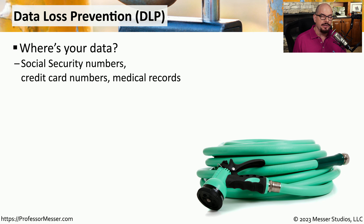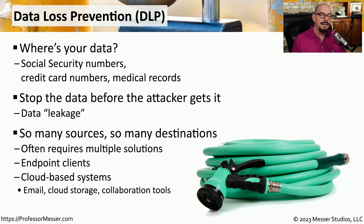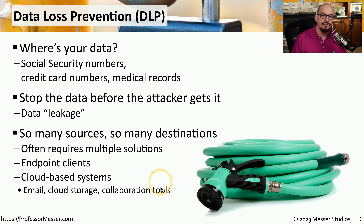If you'd like to stop sensitive data from being transferred across your network, then you should look into using data loss prevention, or DLP. DLP is used to look for and block any type of data that you do not want running on your network. So if somebody is transferring social security numbers, medical information, credit card data, or any other type of sensitive information, you can identify it and block it using a DLP solution. This provides a way to constantly monitor the traffic in real time, and if anything is identified that could be considered sensitive, you can block it — especially if you're concerned about attackers trying to transfer that information outside of your network. On many networks, this is more than just one single appliance. An organization might use DLP software on their endpoints or have cloud-based systems that can monitor this traffic even when it's in the cloud.